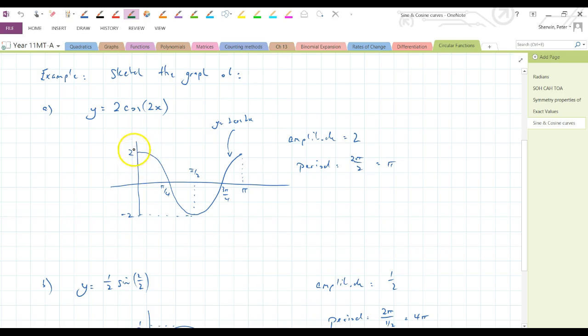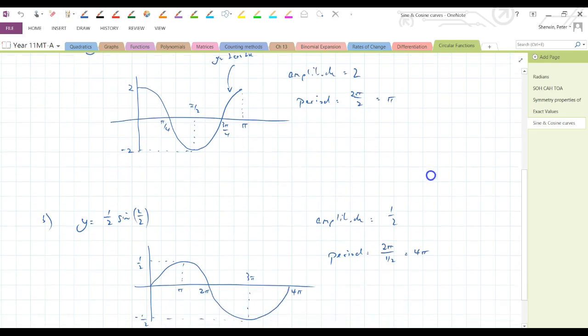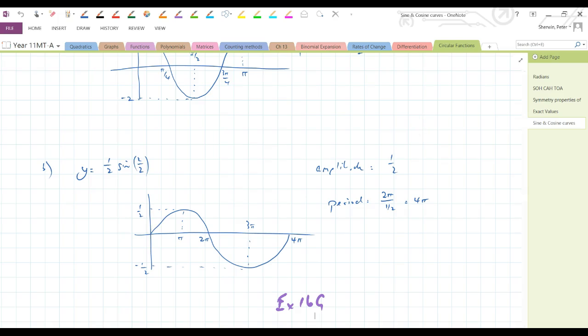So on our y-axis, we've got to go up to 2 and minus 2, and then we've got this bell shape, but our period is 2 pi over 2. Okay, so 2 pi over 2, or pi is our period. So one complete cycle goes through pi. If we had to go out to 2 pi, we'd just do another one of them.